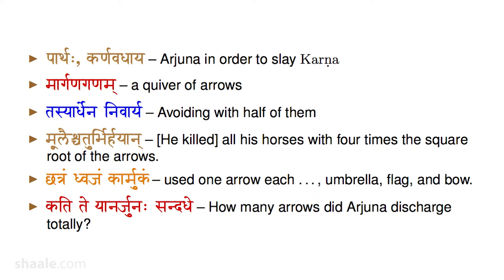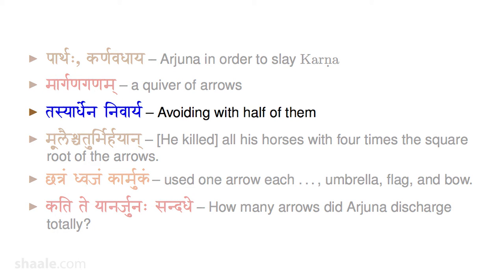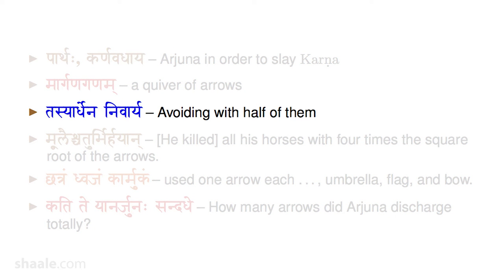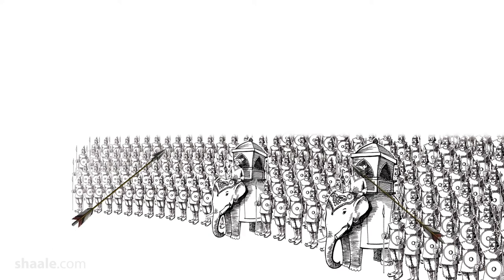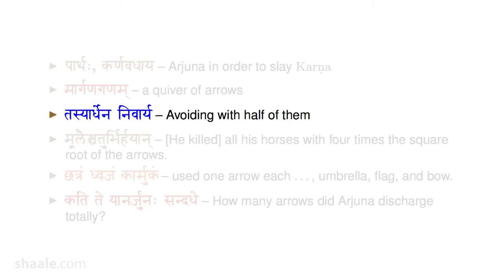Kruddha Rane Sandadhe — in the battle he shot. He graphically describes how many arrows were used for a specific purpose. Suppose you have x number of arrows which were shot — so x by 2. Tasyaardhena Nivariya Tachharaganam: if the other fellow shoots an arrow, you also shoot in the same direction so that they just meet each other and fall. So, x by 2 arrows were essentially used only to collide with the other arrows, and then both of them fall down.